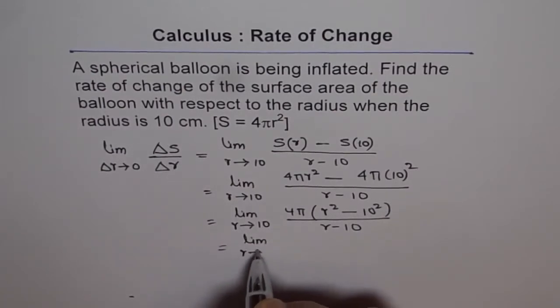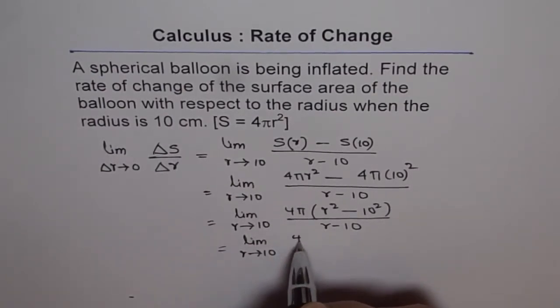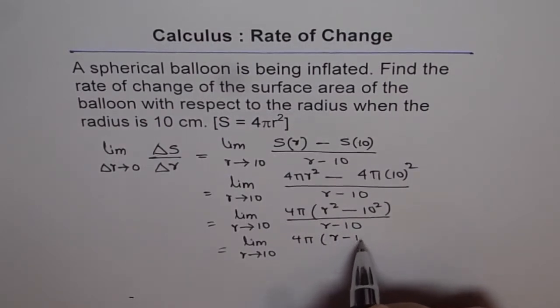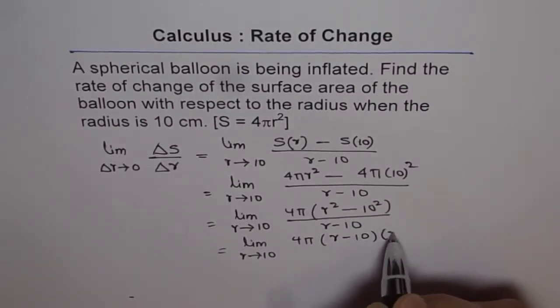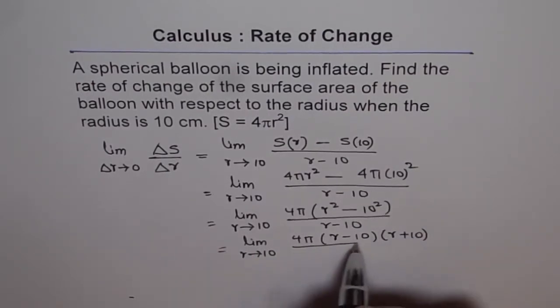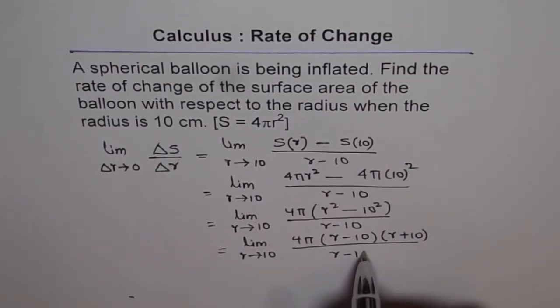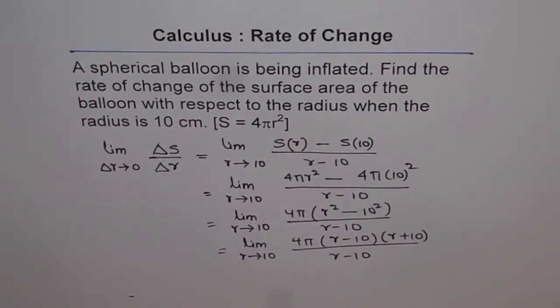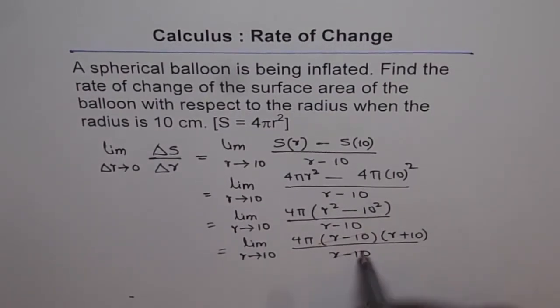So limit r approaching 10. Numerator is 4 pi. And we can write this as r minus 10 times r plus 10 divided by r minus 10. Now, r minus 10 over r minus 10 is 1.